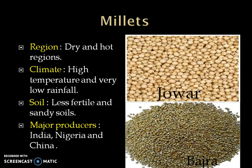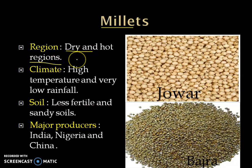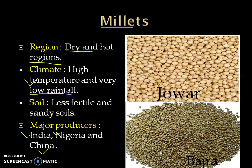Last of all is millet. These are coarse grains such as jowar, bajra, and ragi. They are very rich in carbohydrates. They grow well in dry and hot regions. The western part of Rajasthan is known for the production of millets. The major producing countries of millets are India, Nigeria, and China. It requires high temperature and very low rainfall. It grows well in less fertile and sandy soil.